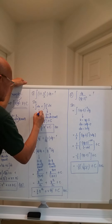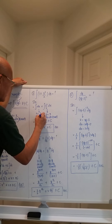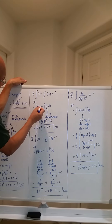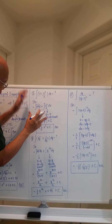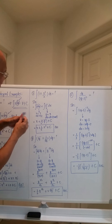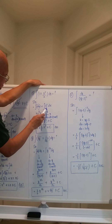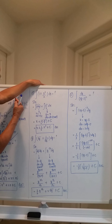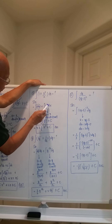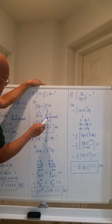For the first term, u equals x and du equals dx — it is exact; nothing needs to be added for it to be exact. For the second term, the 1/2 coefficient is just brought out from the integral. The value of u for the second term is simply x, and du equals dx.